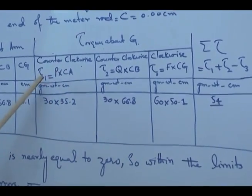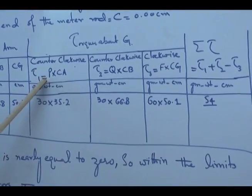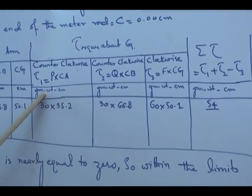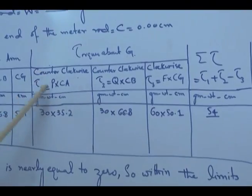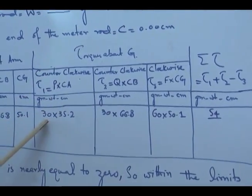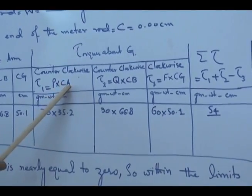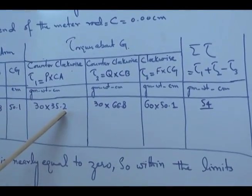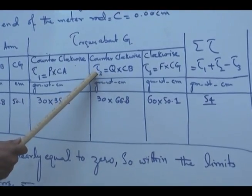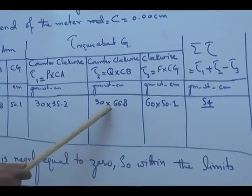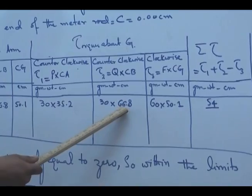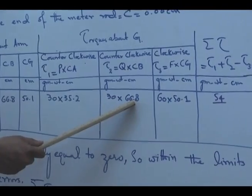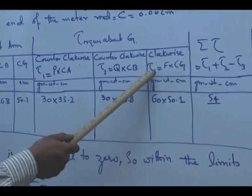Two torques are counterclockwise and one torque is clockwise. Torque T1 is counterclockwise and equals force P into its moment arm C-A. The unit is gram weight centimeter. P is 30 gram weight and C-A is 35.2 centimeters. Similarly, counterclockwise torque T2 equals 30 into 66.8, where 66.8 is the moment arm of the second force acting at spring balance S2.